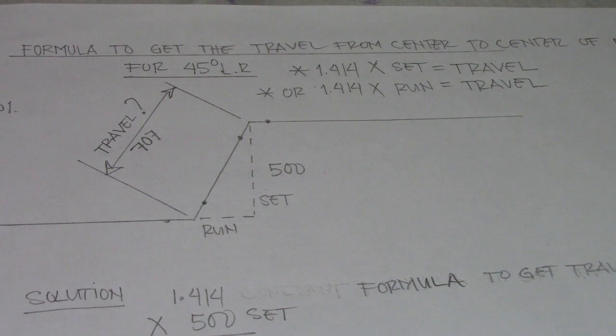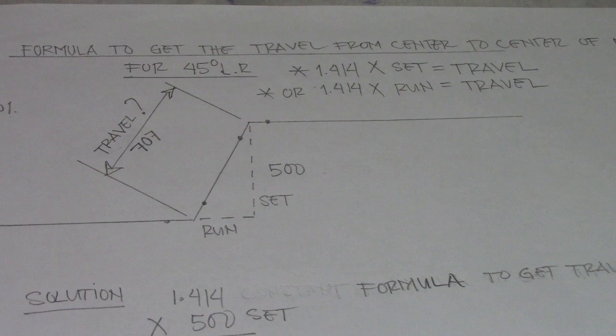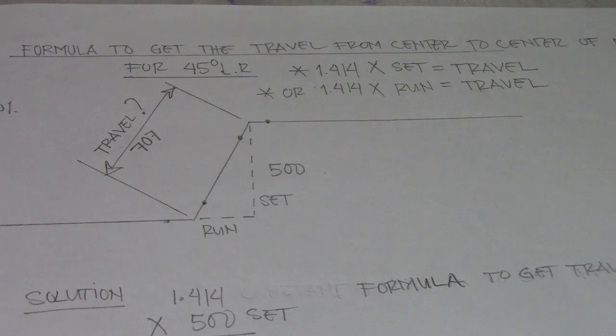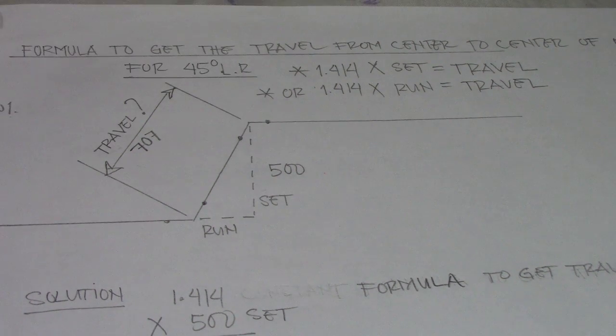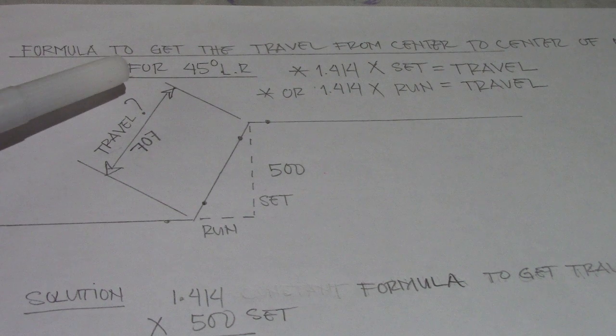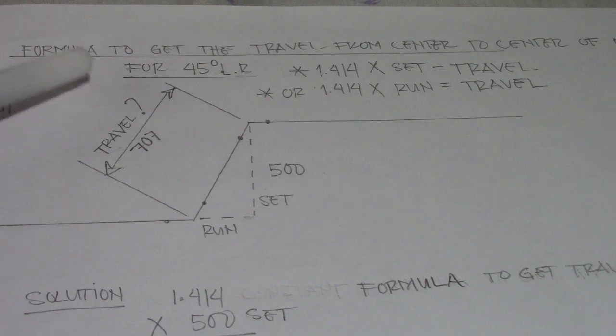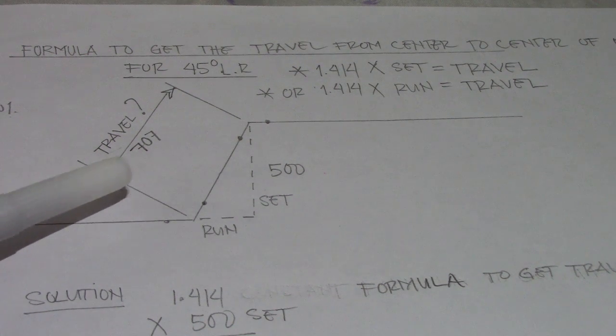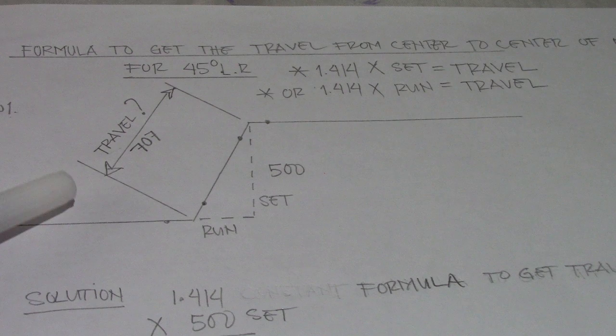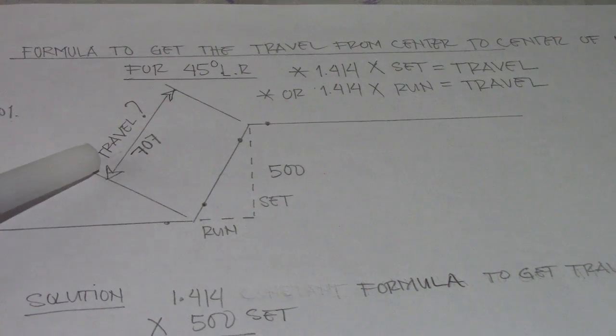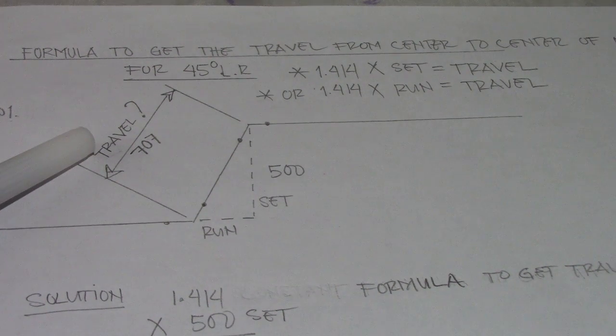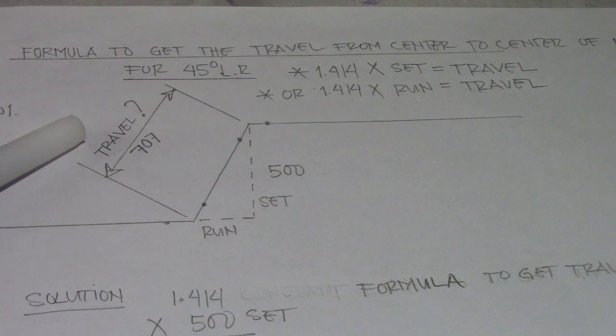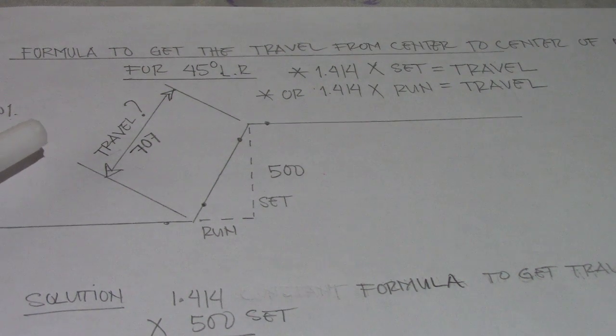This is the formula to get travel from center to center of elbow. We have a 45 degrees elbow, long radius, and this is the drawing. We have a question mark here - this is a sample where we will find this travel, and we have a given set and run.